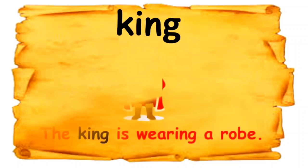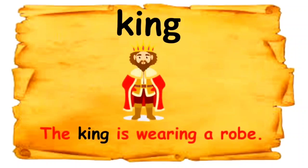What does king mean? King is an emperor. I have used the word king in a sentence like: The king is wearing a robe. You can see the red robe — the king is wearing a robe.